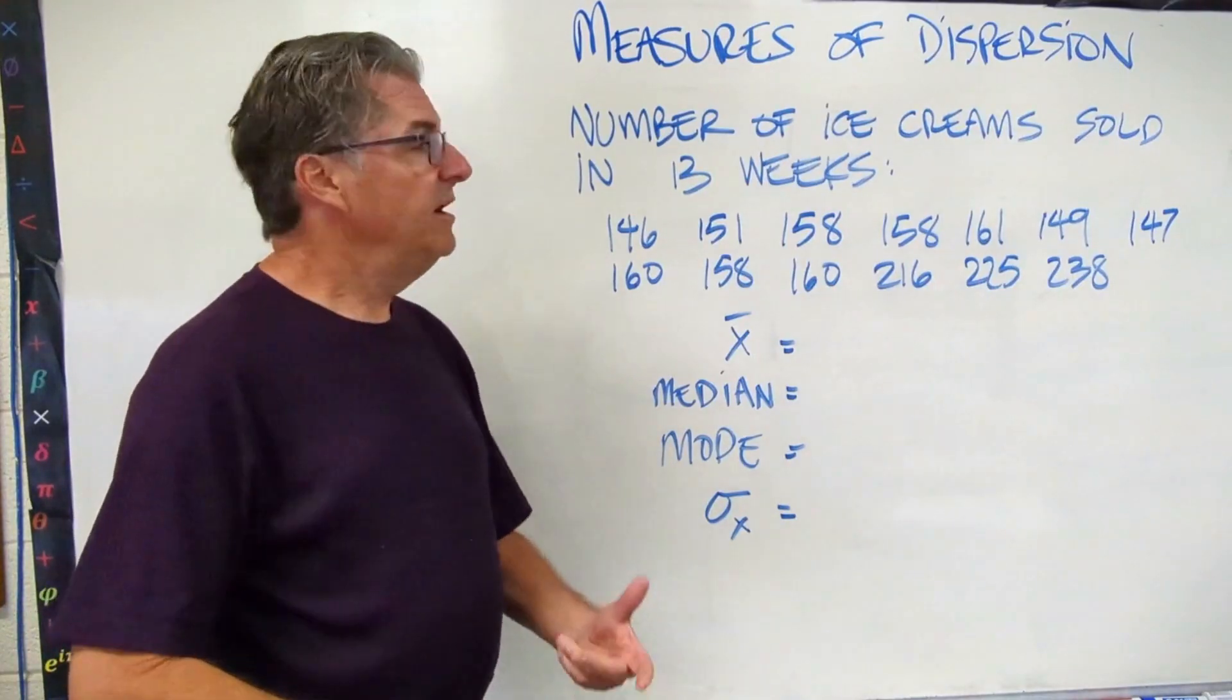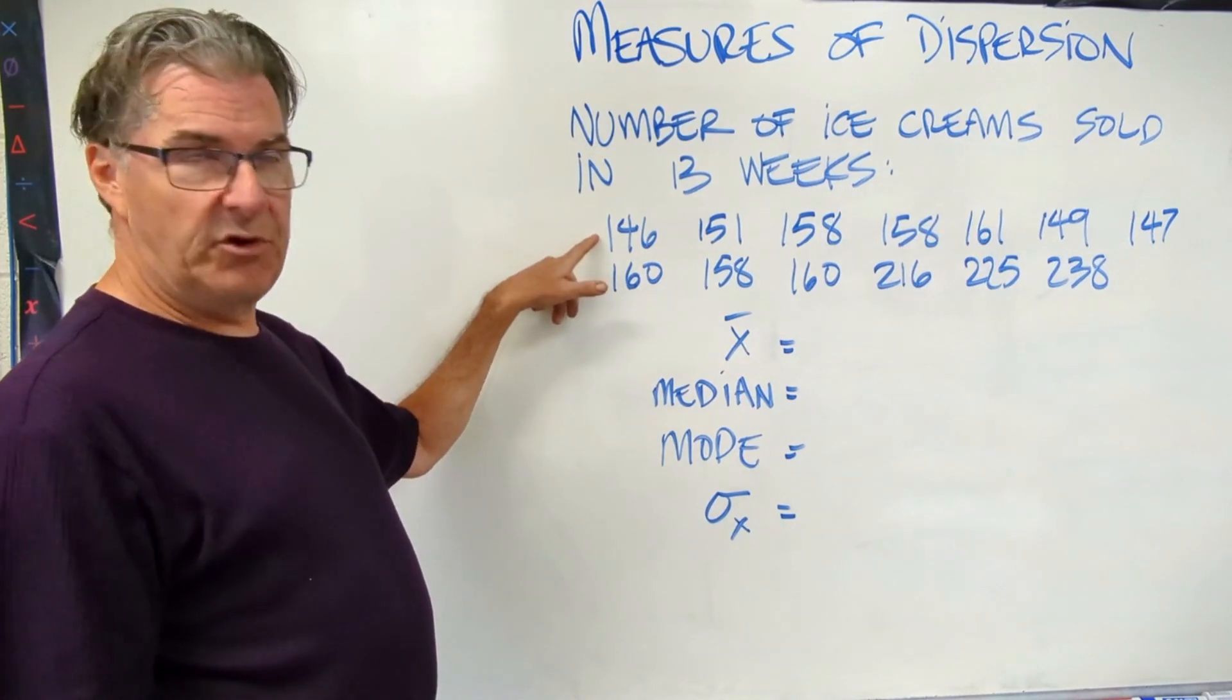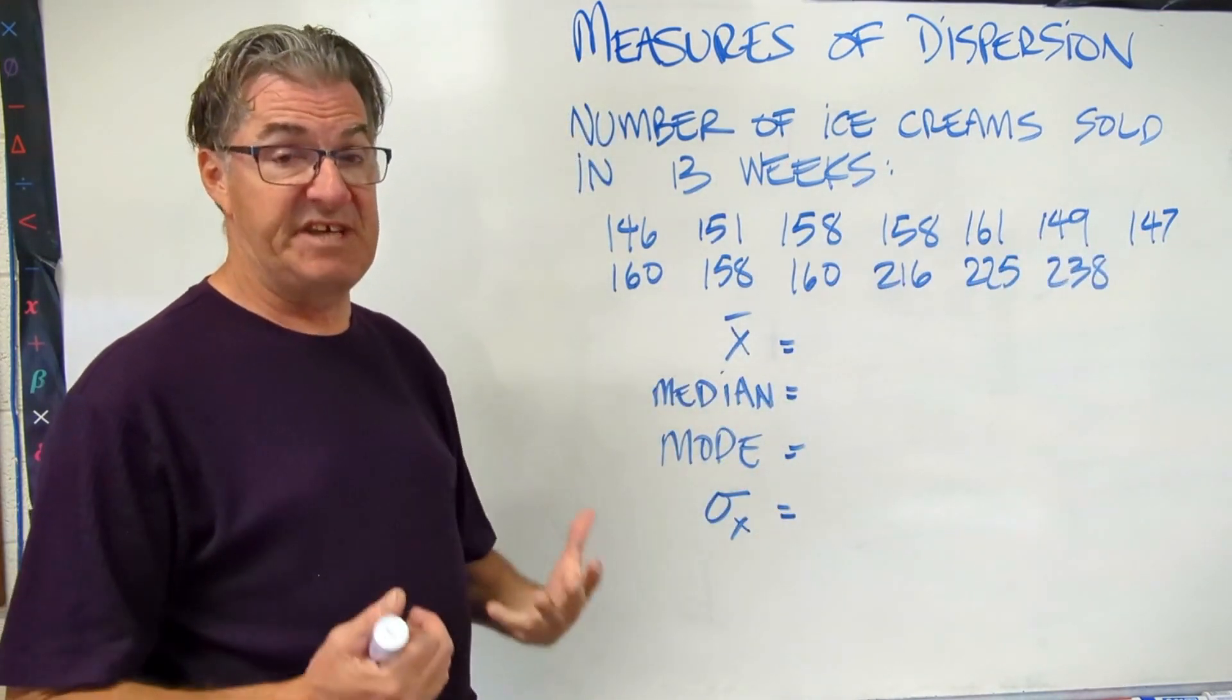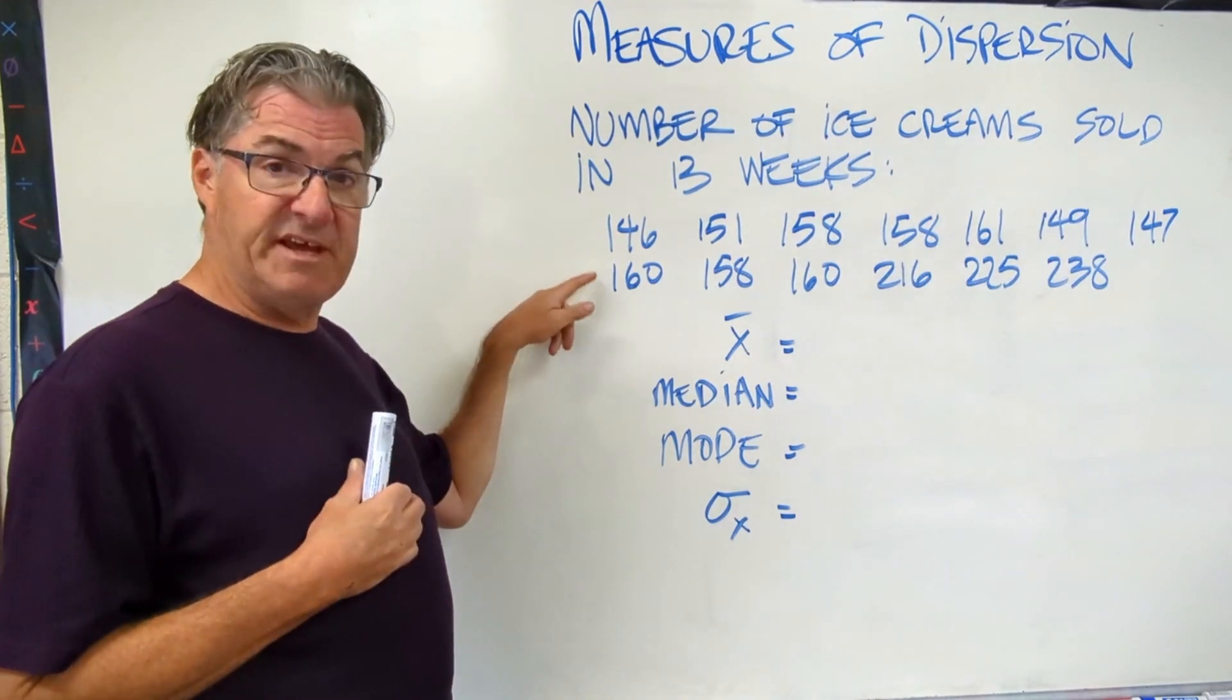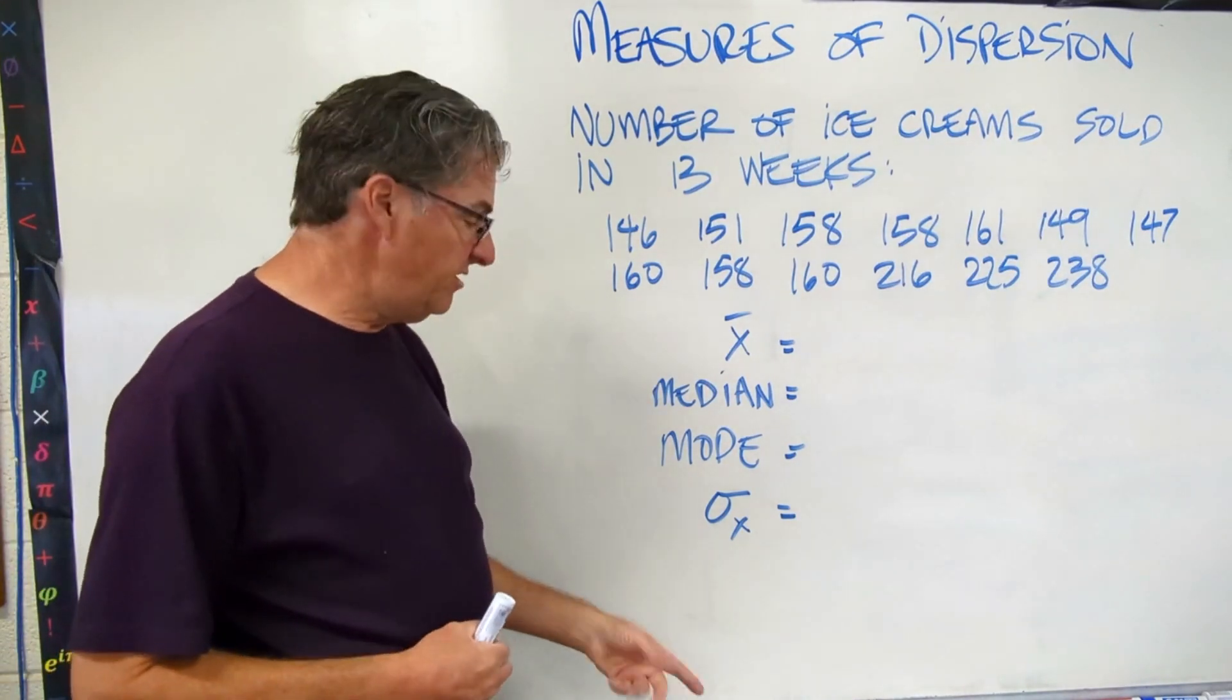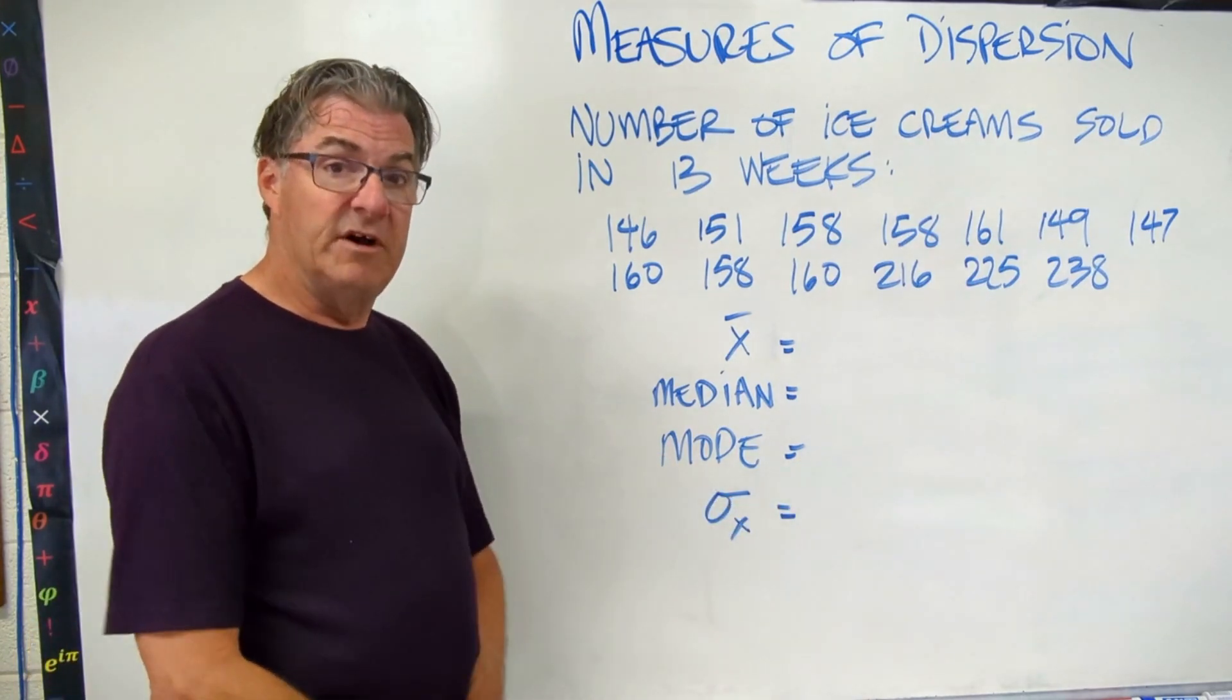Alright, let's do an example. Here we've got the number of ice creams sold over a 13-week period. So week one, we sold 146 ice creams. Week two, 151, and so on. These are our 13 data points for this data set. Now what I want you to do is go ahead and put these in your graphing display calculator and find the mean, median, and mode. And then notice that one of the results on your calculator is the sigma x, or the standard deviation. So go ahead and put that there as well. Pause the video and do that calculation.